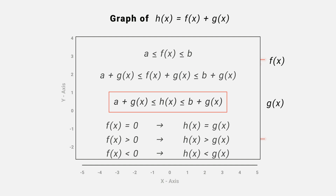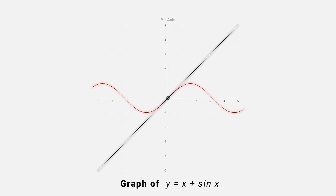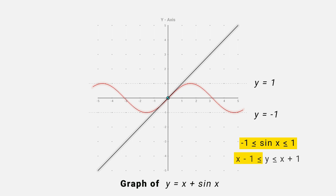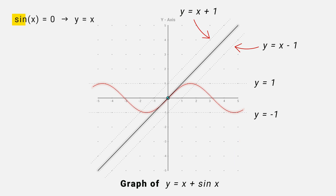Let's take some example. y equals x plus sin x. We know that sin x lies between minus 1 and 1. So y lies between x minus 1 and x plus 1. We can easily draw the graph of x minus 1 and x plus 1. Now when sin x is equal to 0, we get y equal to x.